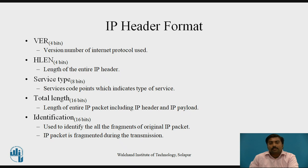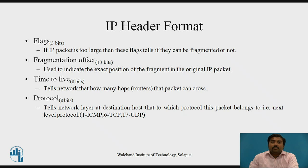The identification field is 16 bits and is used to identify all the fragments of the original IP packet. An IP packet may be fragmented during transmission. The flags field is 3 bits and identifies whether the IP packet can be fragmented or not if it is too large. The fragmentation offset field is 13 bits and indicates the exact position of the fragment in the original IP packet.